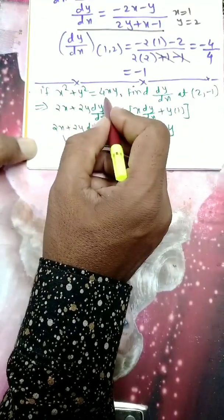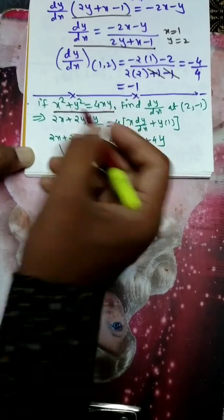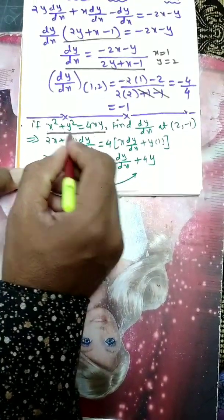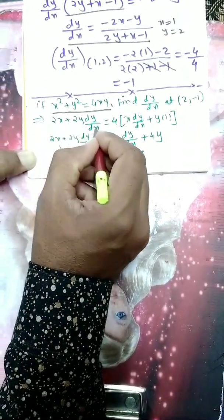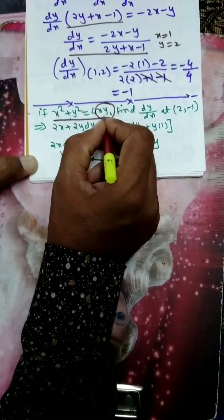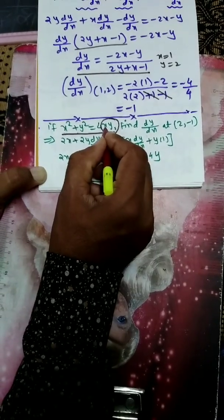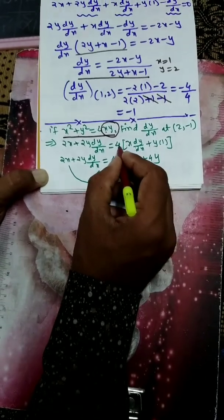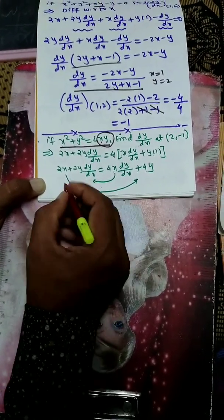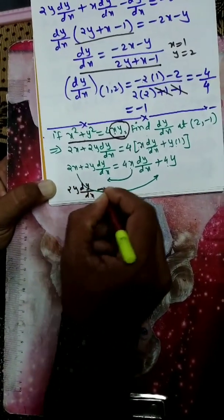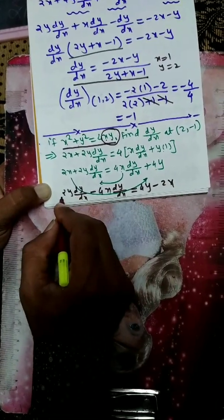If x² + y² = 4xy, find dy/dx at x = 2 and y = -1. Differentiating with respect to x: derivative of x² is 2x, derivative of y² is 2y dy/dx. For 4xy, apply the u·v rule: 4[x dy/dx + y·1] = 4x dy/dx + 4y. Collecting dy/dx terms: (2y - 4x) dy/dx = 4y - 2x. Then substitute x = 2 and y = -1 to get the required value.